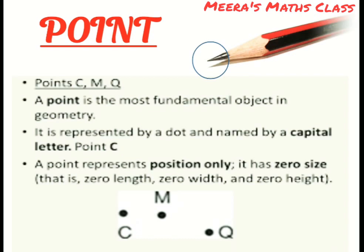A point is the most fundamental object in geometry. It is represented by a dot and named by a capital letter. A point represents position only. It has zero size, that is zero length, zero width, and zero height.